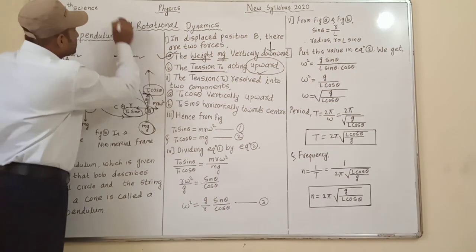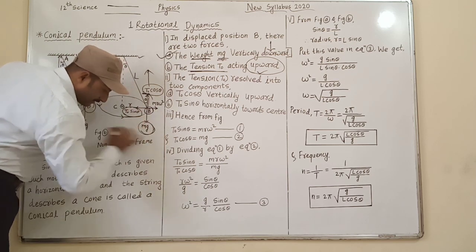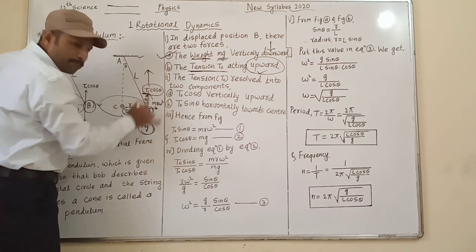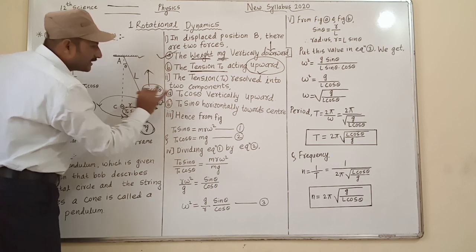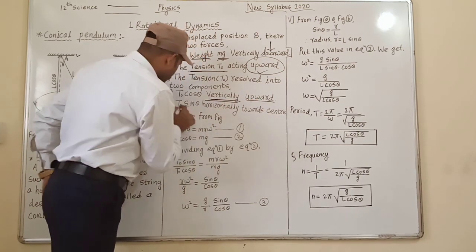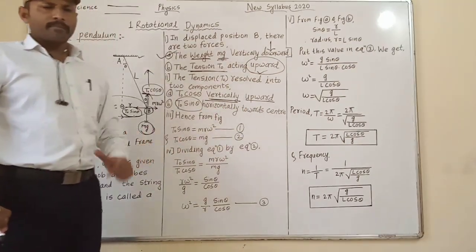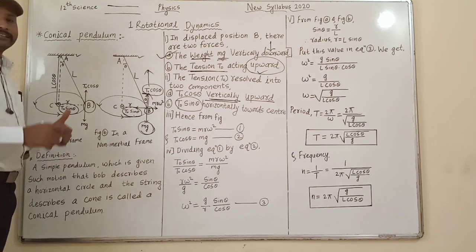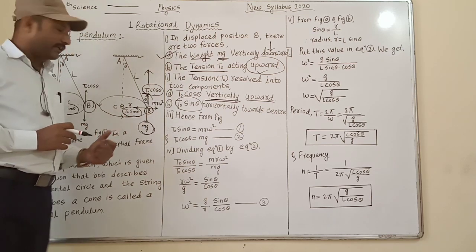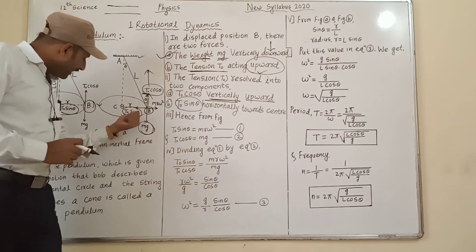Horizontal means parallel to the horizontal position. So T₀sinθ is the horizontal component and T₀cosθ is the vertical component acting upward. Remember, only two components are here: first, T₀cosθ which is the vertical component, and T₀sinθ which is the horizontal component.